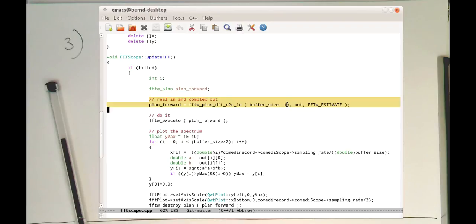So we see here this function FFTW plan DFT R2C. This means real to complex in one dimension, because it also is able to convert images. And then we just give it the buffer size. We give it the input array. We give it the output array. And then this magic constant here, which is just a constant which is determining the speed of the computation. FFTW estimate is trying to do it as fast as possible. And then after we have created this plan here, then the FFT library knows what to do with it.